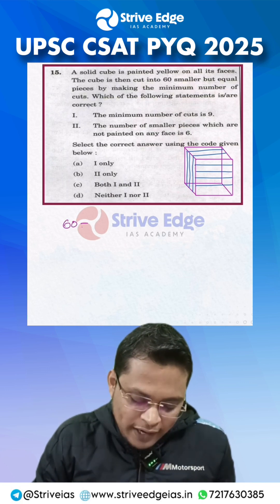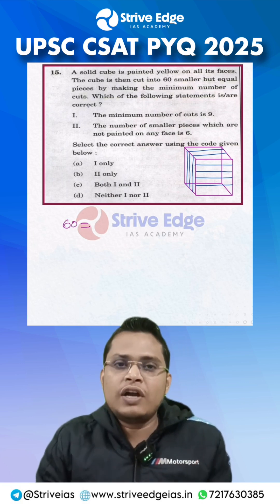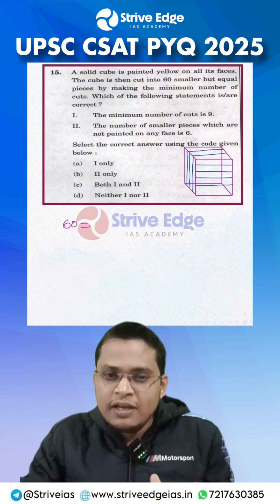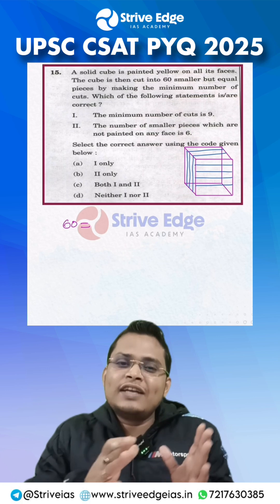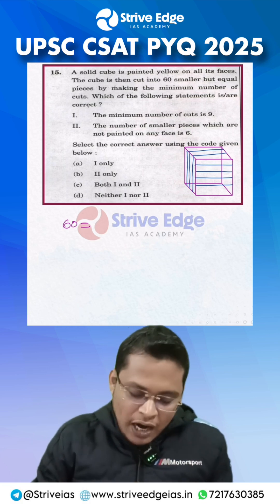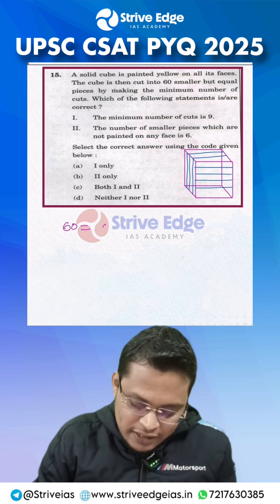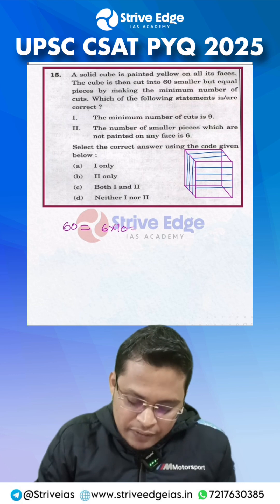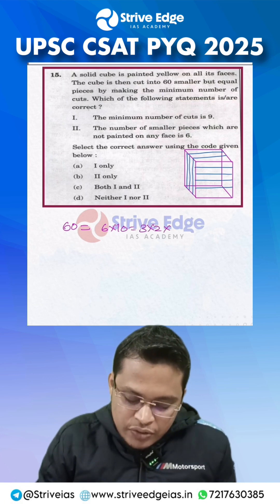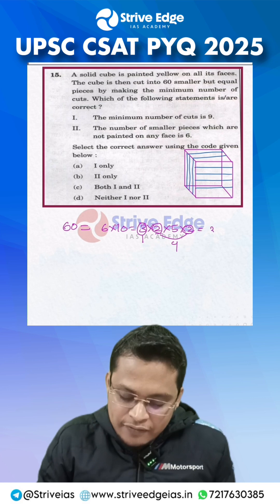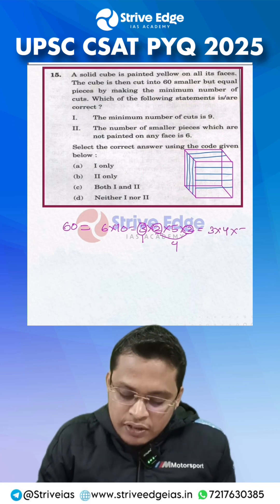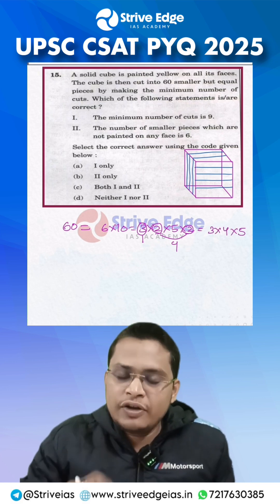Given the number of smaller pieces is 60. To find the minimum number of cuts, we factorize 60 into 3 equal products. We can write 60 as 6 into 10, where 6 equals 3 into 2 and 10 equals 5 into 2. So we can distribute into 3 equal factors: 3, then 2 into 2 which is 4, and 5. This is the most equal product of 3 terms that gives 60.